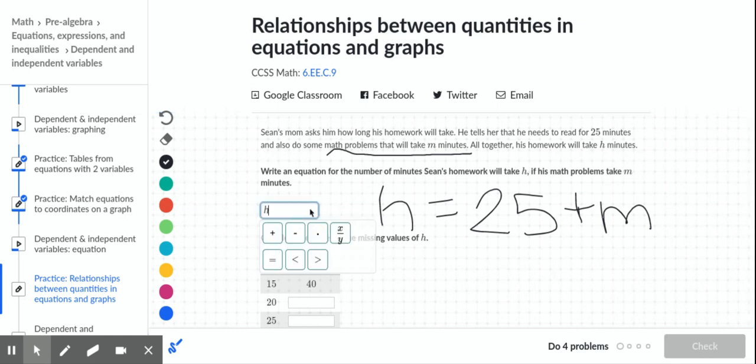So when we write our equation, we'll use the variables they gave us. H, the total amount of homework time, is equal to 25 plus M.